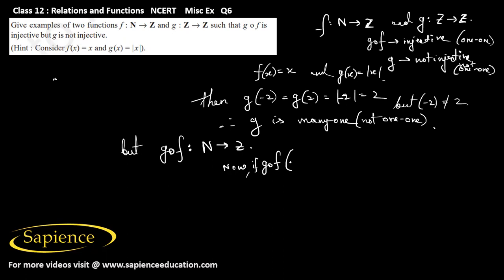Now if g of f of x1 equals g of f of x2, that implies x1 equals x2 for all x1, x2 belongs to N.